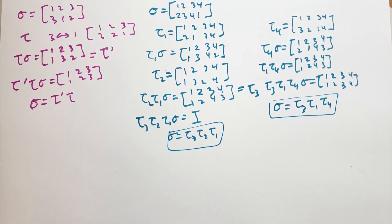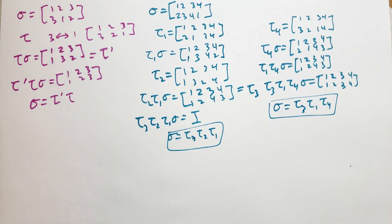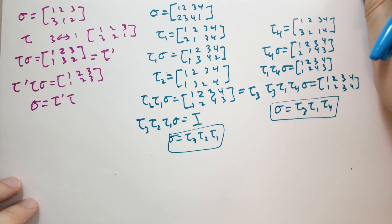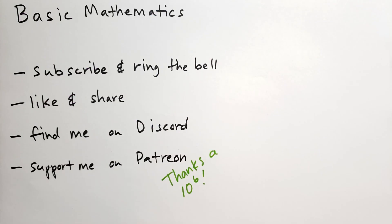The number of transpositions occurring may not be the same — we can find other combinations, maybe with 5 or 7 transpositions. But there is Theorem 2, which says that the transpositions must remain even or odd: if a permutation has an even number of transpositions, then any other possible combination must also be even, and similarly for odd. We'll cover that in the next video. I hope you enjoyed this — take care and bye-bye. This video was part of my series on Basic Mathematics by Serge Lang. Be sure to subscribe, ring the bell, like, and share. You can find me on Discord and support me on Patreon. Thanks a million.